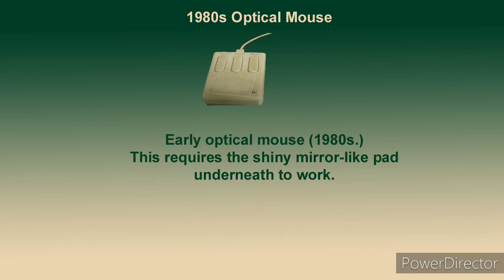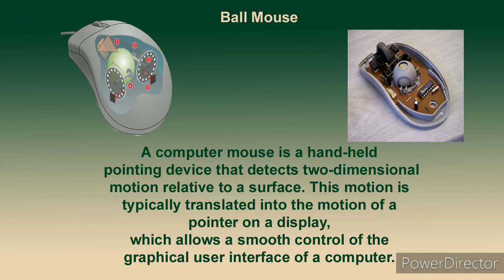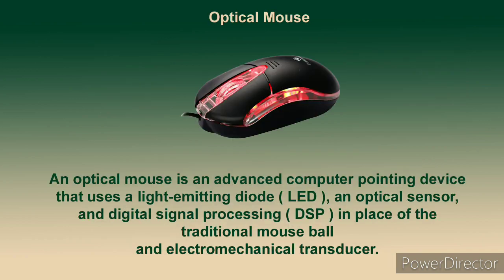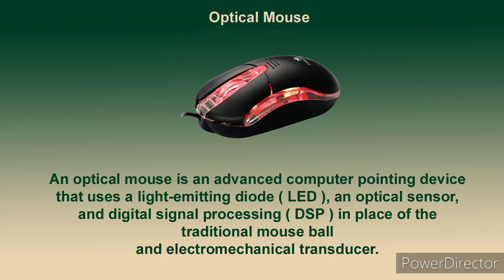The early optical mouse of the 1980s required a shiny, mirror-like pad. The ball mouse moves on the X and Y axis, allowing smooth control on the pad. The modern optical mouse is a pointing device that uses a light-emitting diode, an optical sensor, and digital signal processing, and it works on any flat surface.